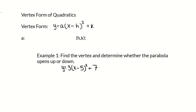The vertex form of a quadratic is y equals a times x minus h squared plus k. In that form of the equation, the a is the scale — it tells us how steep the graph is, or the slope of the graph. It also tells us if the graph opens upwards or downwards. If a is positive, the graph opens upwards. If a is negative, the graph opens downwards. So a is the value in front of the squared term.